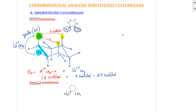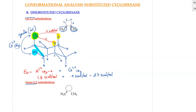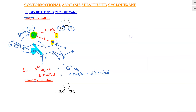There will be no other significant interactions. The CH3 group and this hydrogen do not interact with each other — only when it's a methyl group will it be significant. When hydrogen interacts with hydrogen it is considered to be zero. So overall, 2.7 kcal/mol is what we have for this conformation.